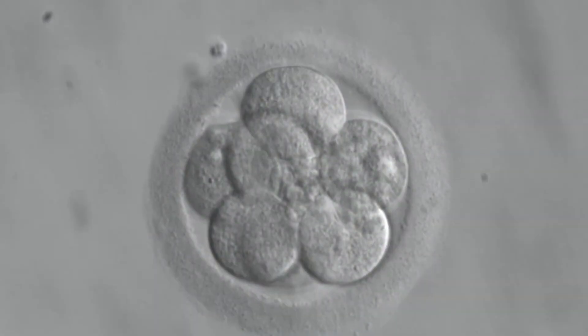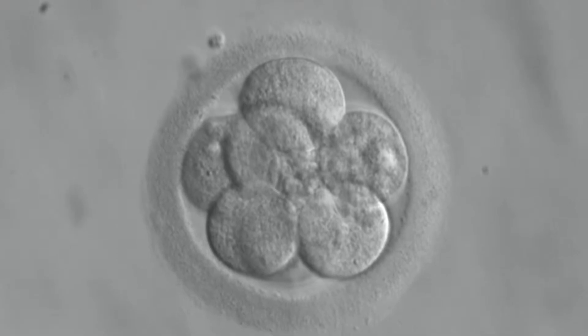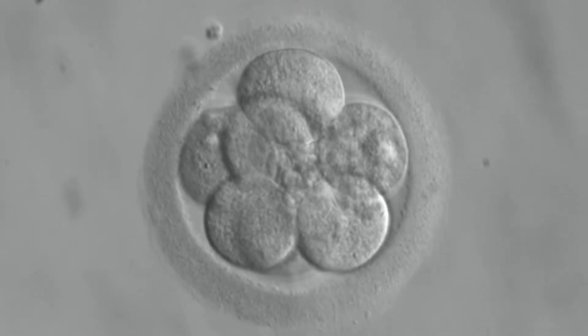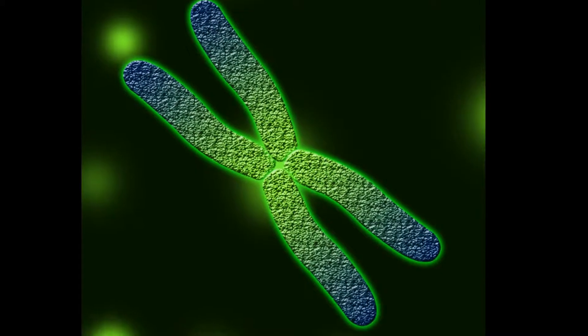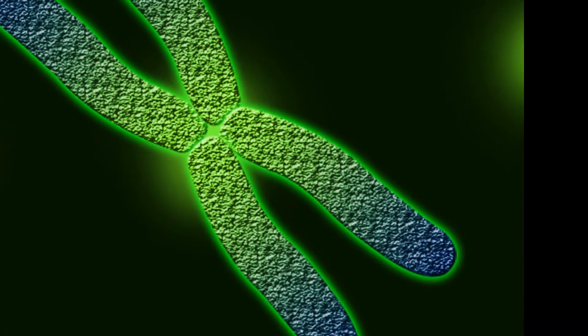The group performed the experiment on 86 non-viable embryos obtained from Chinese fertility clinics. Non-viable means that these embryos cannot result in a pregnancy. All 86 of the embryos had a mutation which would have led to a blood disease called beta-thalassemia.